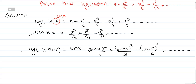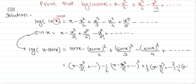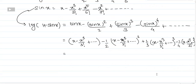Now sin x equals x minus x cubed by 3 factorial plus dot dot dot. So substituting: (x minus x cubed by 3 factorial + ...) minus (1/2)(x minus x cubed by 3 factorial + ...)squared plus (1/3)(x minus x cubed by 3 factorial + ...)cubed minus (1/4)(x minus x cubed by 3 factorial + ...)raised to 4.